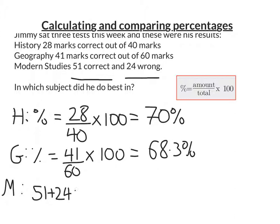So I'm going to add 51 and 24 together. That will tell me how many marks there were in total. I can put that in my calculator and that will give me 75. So there's 75 marks in the Modern Studies paper.